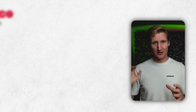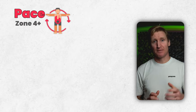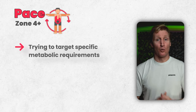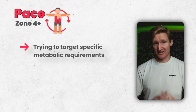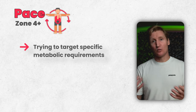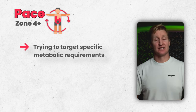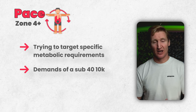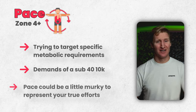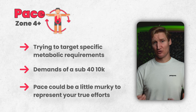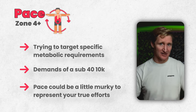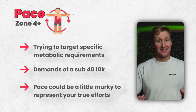As we get into zone four and above, pace is really good — unless we're doing hill repeats, which is where power comes in. With pace in zone four and up, we're targeting specific metabolic requirements. If we want to run a sub-40 10K, we need to run at an intensity that elicits those demands. But if you don't live in a dead-flat area, pace can be murky in representing your true effort — and that's where I'd like to introduce running power.